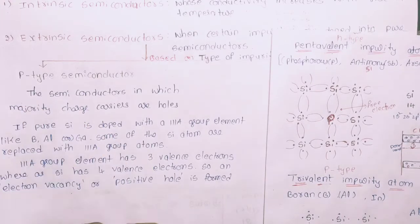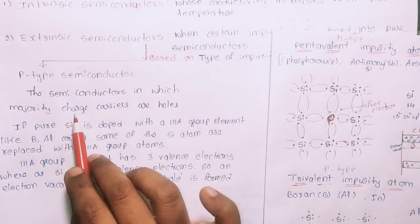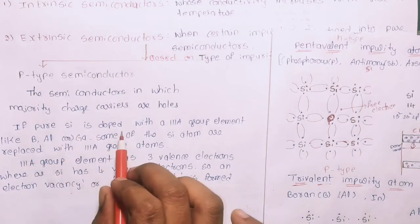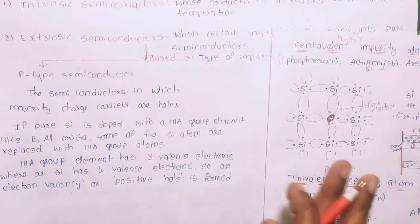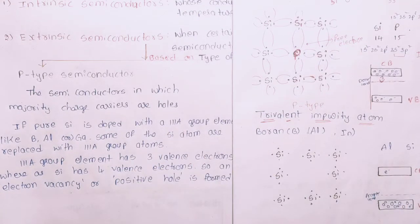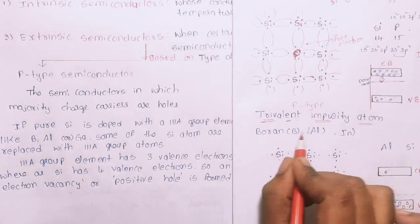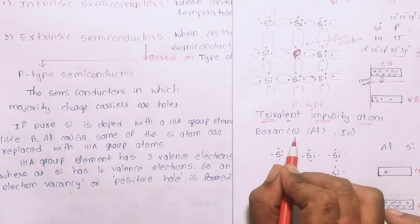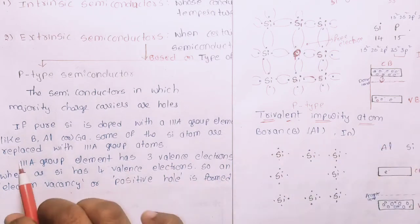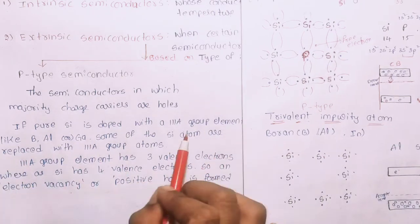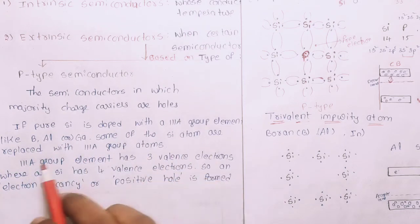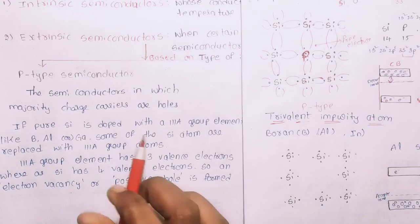P-type semiconductors are semiconductors in which the majority charge carriers are holes. If pure silicon is doped with third group — that is, trivalent — impurity atoms, we get P-type semiconductors. The trivalent impurity has only 3 valence electrons.